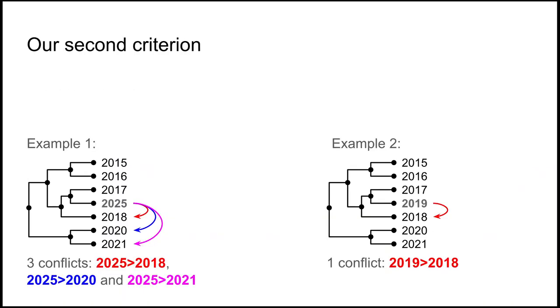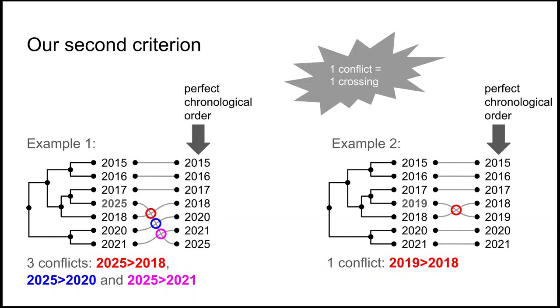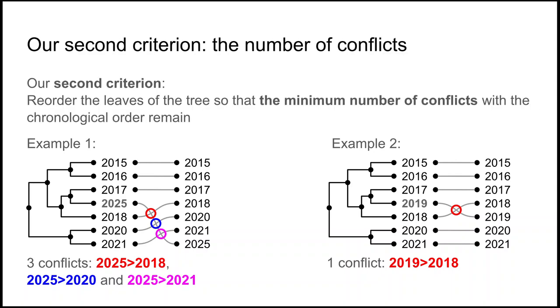So we introduced the number of conflicts, meaning the number of dates which are not properly ordered considering the chronology. So here you have three conflicts with 2025. You only have one with 2019. And so these conflicts, to visualize them better, we can use this technique, it's a visualization technique. You put the perfect chronological order on the right. You put links when the year is the same on the left and on the right. And actually, you see that the number of conflicts is exactly the number of crossings in this visualization. So our second criterion is the minimum number of conflicts when we try to find the best order to respect the chronological order.